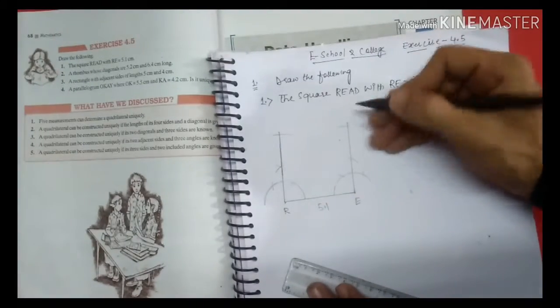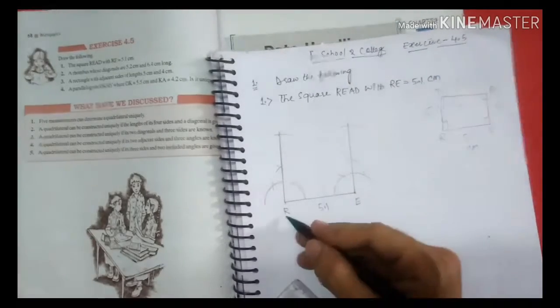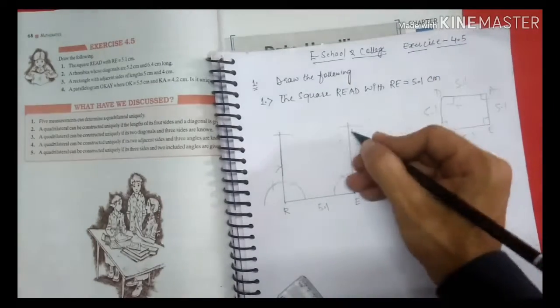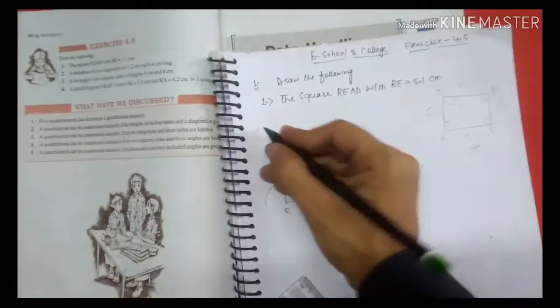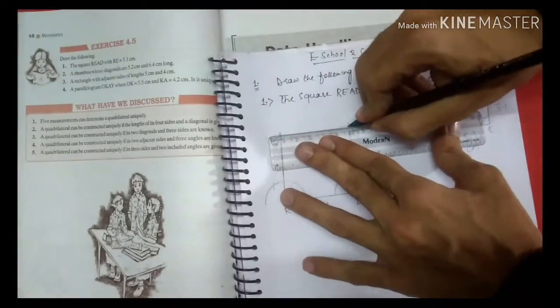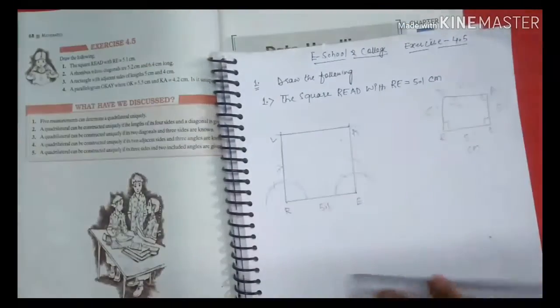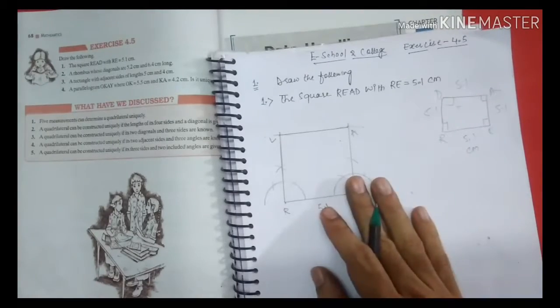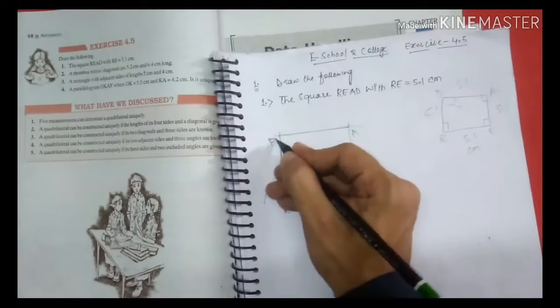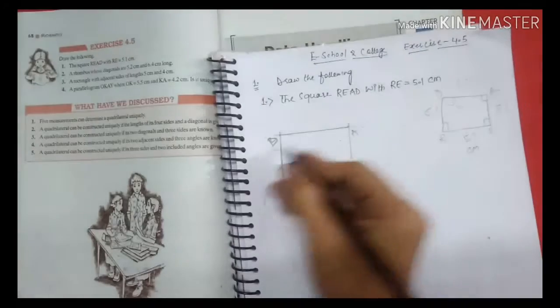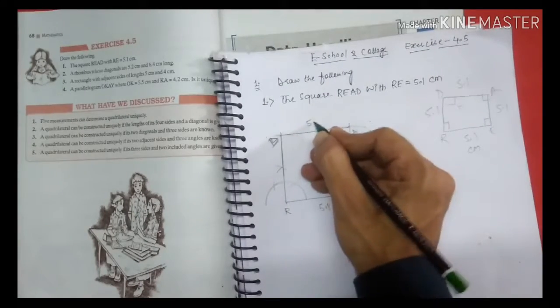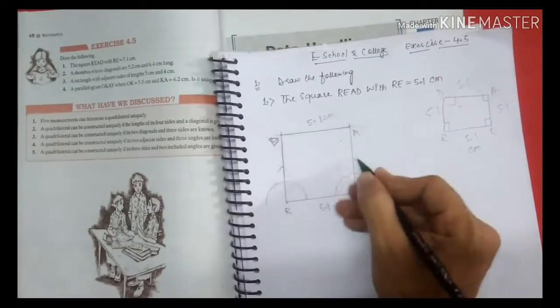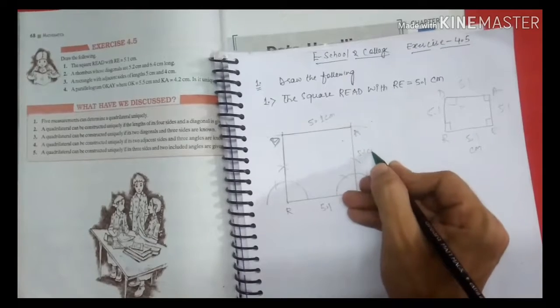Intersection point, this is R, this is E, this is A, and this is L. This is what we have obtained: R-E-A-L. This is our 5.1 centimeter, 5.1 centimeter.